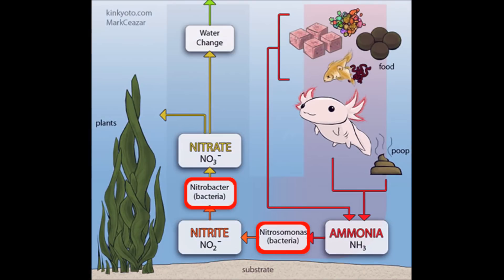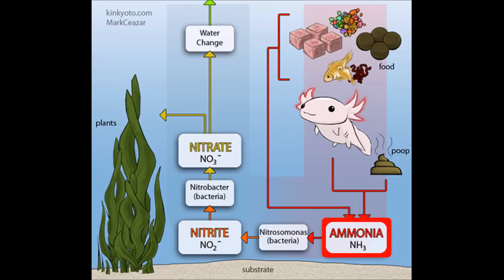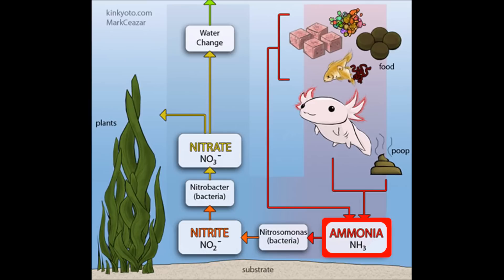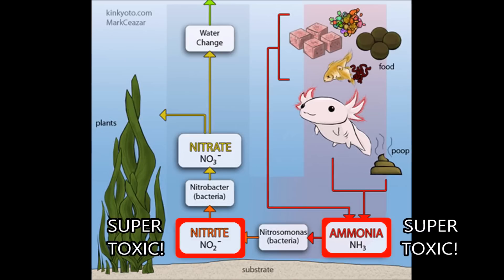These bacterial colonies start off very small because you initially have no waste and therefore no ammonia in the tank for them to metabolize, so they grow and multiply very slowly. That means that excess waste will create an abundance of ammonia and nitrite that can poison your shrimp or fish while these bacterial colonies establish themselves in your tank.